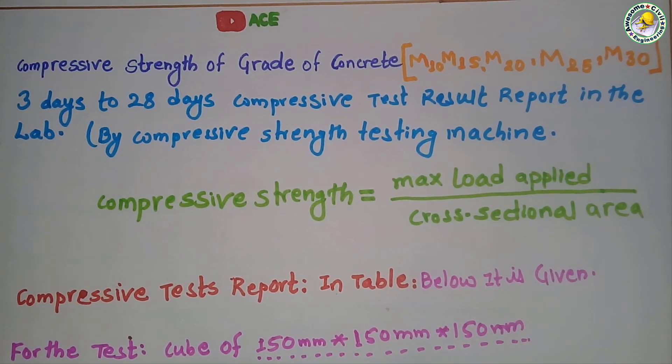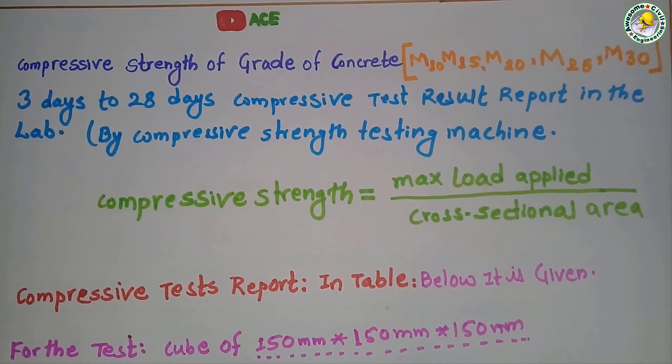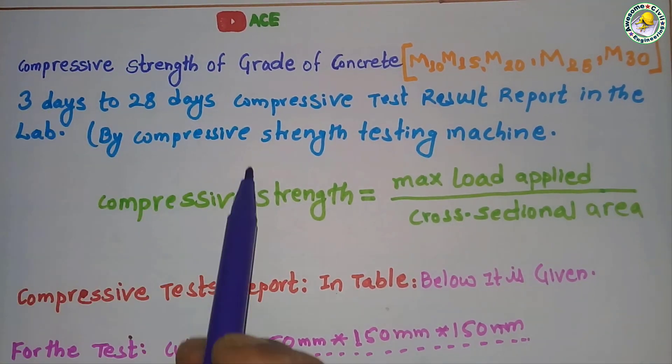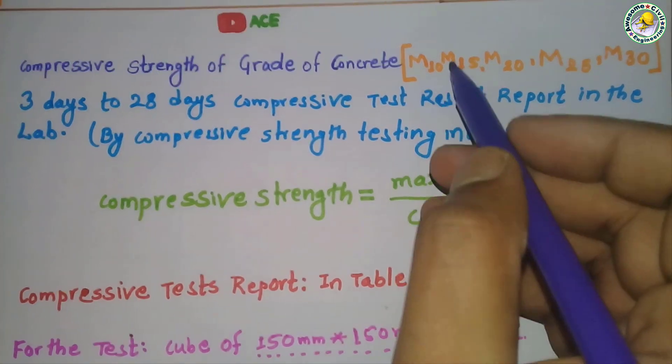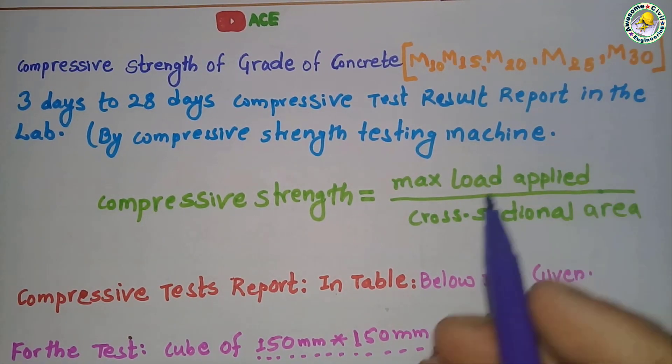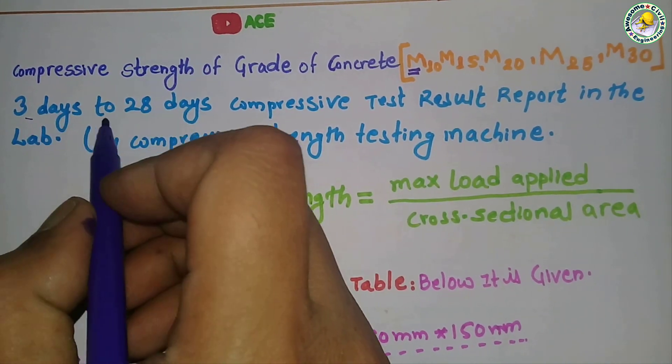Hello friends, welcome to Awesome Civil Engineering channel. Today we are going to discuss compressive strength of grade of concrete - compressive strength of grade of concrete M10, M15, M20, M25, and M30. Compressive strength from 3 days to 28 days compressive strength test.